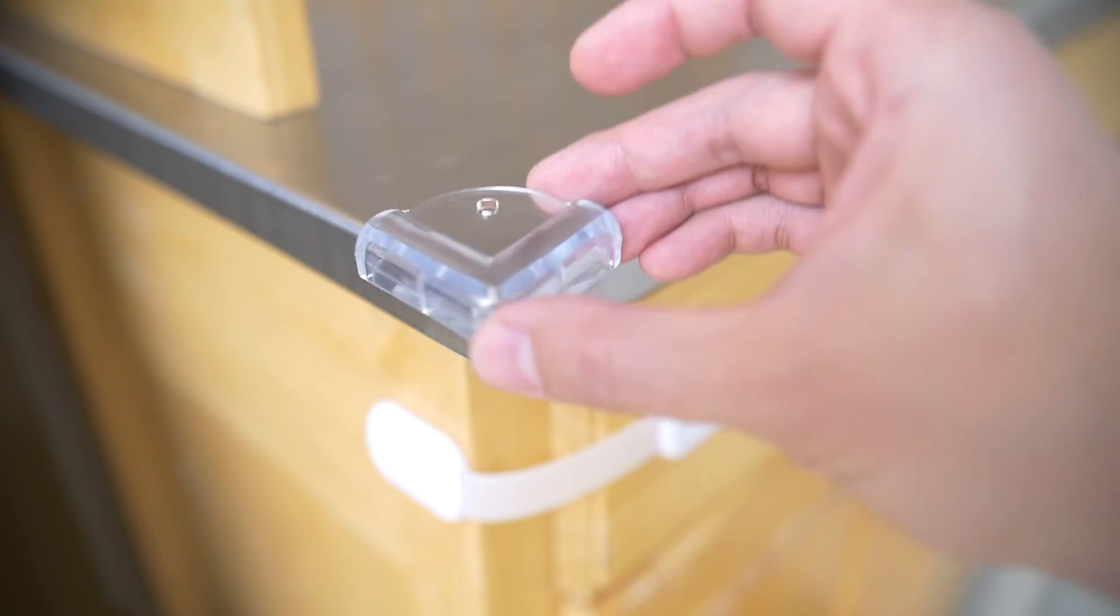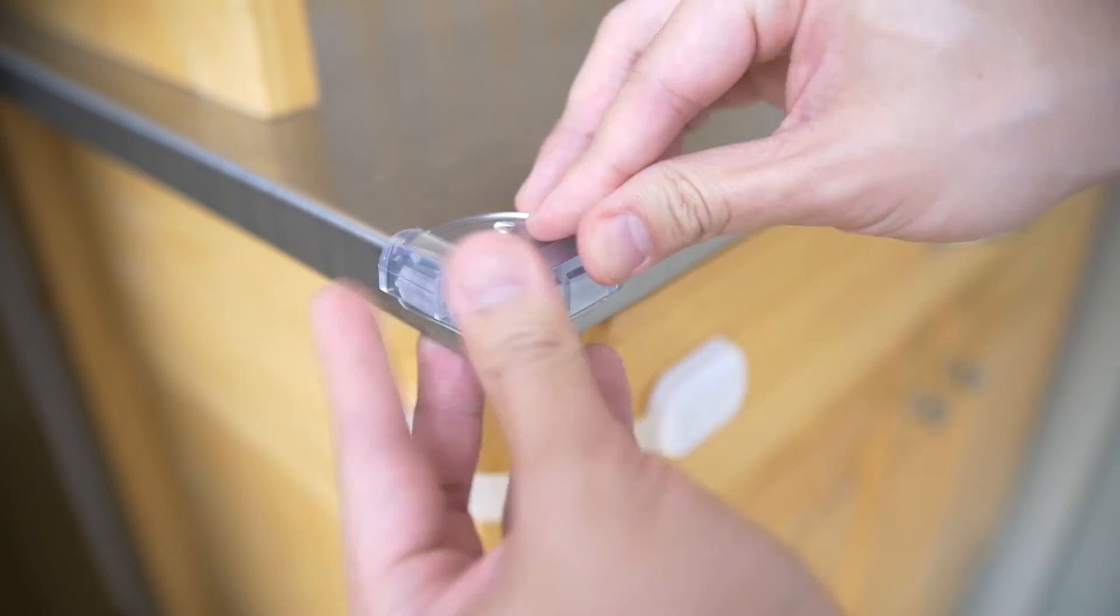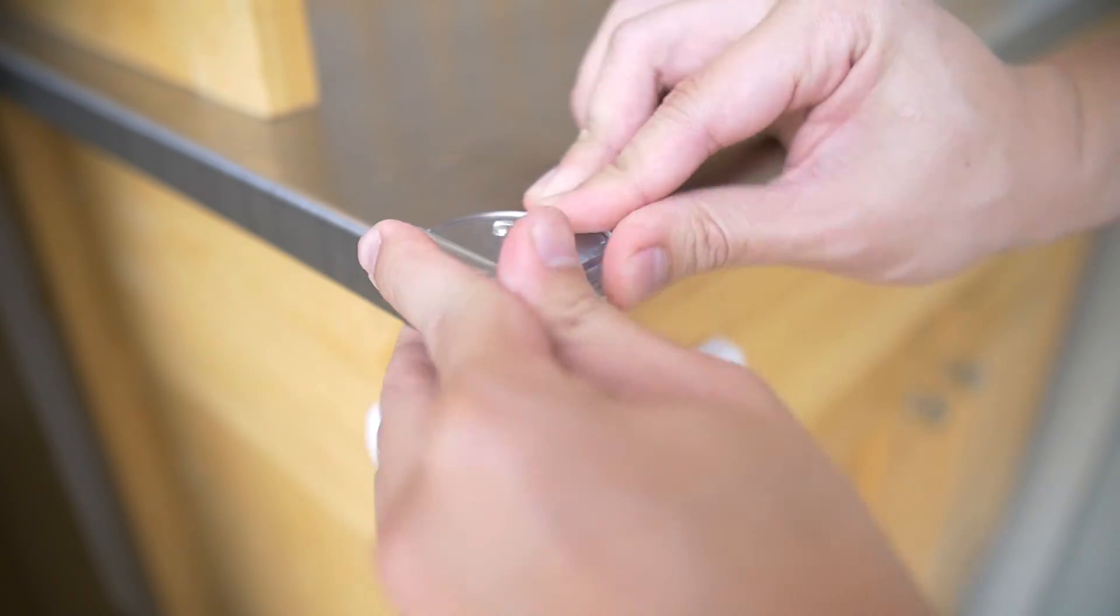Step three, place the corner guard into position and press firmly with your hand. Leave for 24 hours to fully set and that's pretty much it.